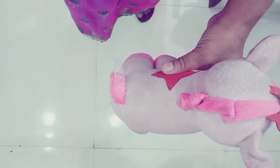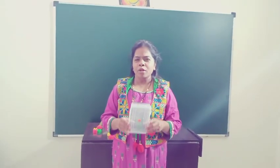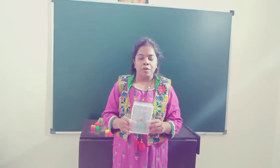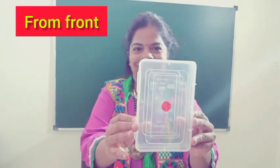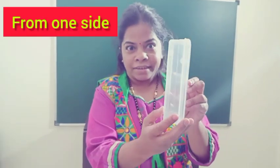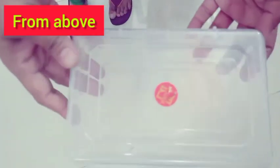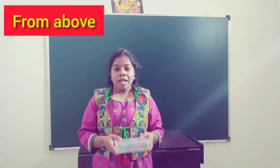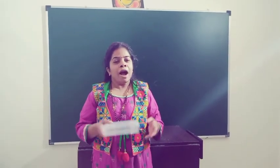Now let us try to understand the example of the cupboard. If we see the cupboard from the front, this is how it is going to look like. When you see it from one side, this is how it is going to look like. And when you see it from up, this is how it looks like. All the objects which you see around you have a three-dimensional shape.